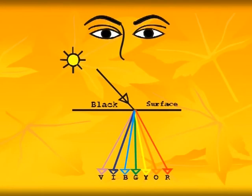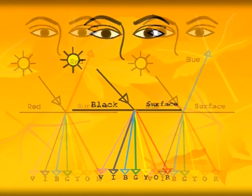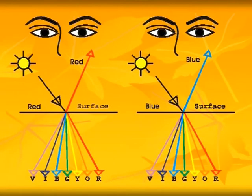When none of the rays are reflected, because all of them are absorbed, the viewer sees black. If one color is reflected and all the rest of the rays are absorbed, the viewer sees the color produced by the specific reflected ray or combination of rays.